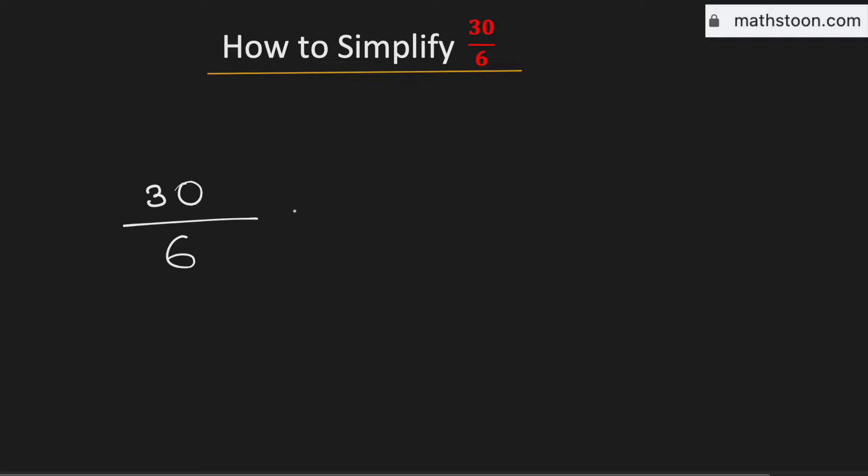Both the numbers are even numbers, so we can write them as a product of 2 and something. We know that 6 can be written as 2 times 3 and 30 can be written as 2 times 15.